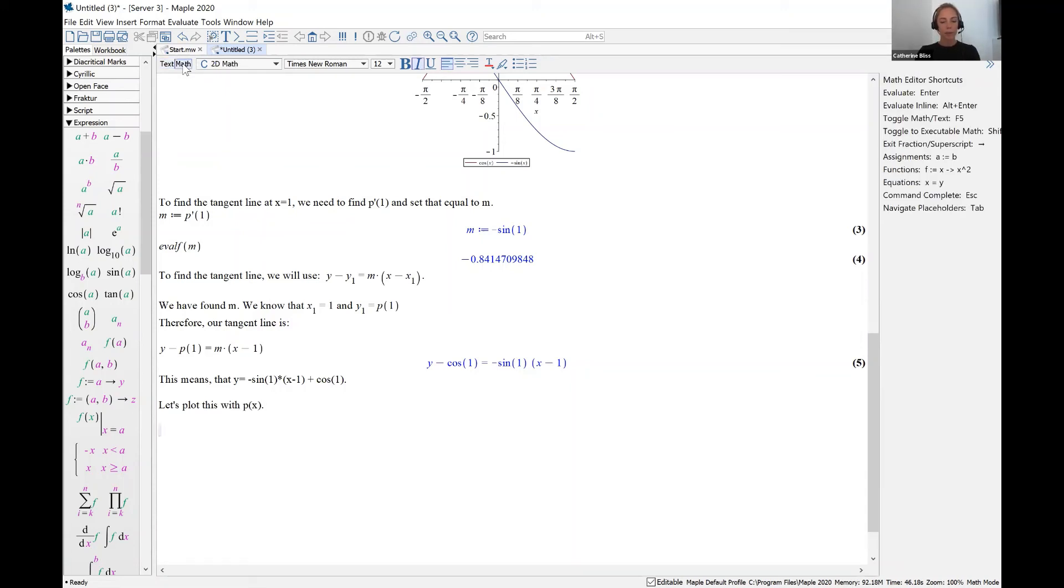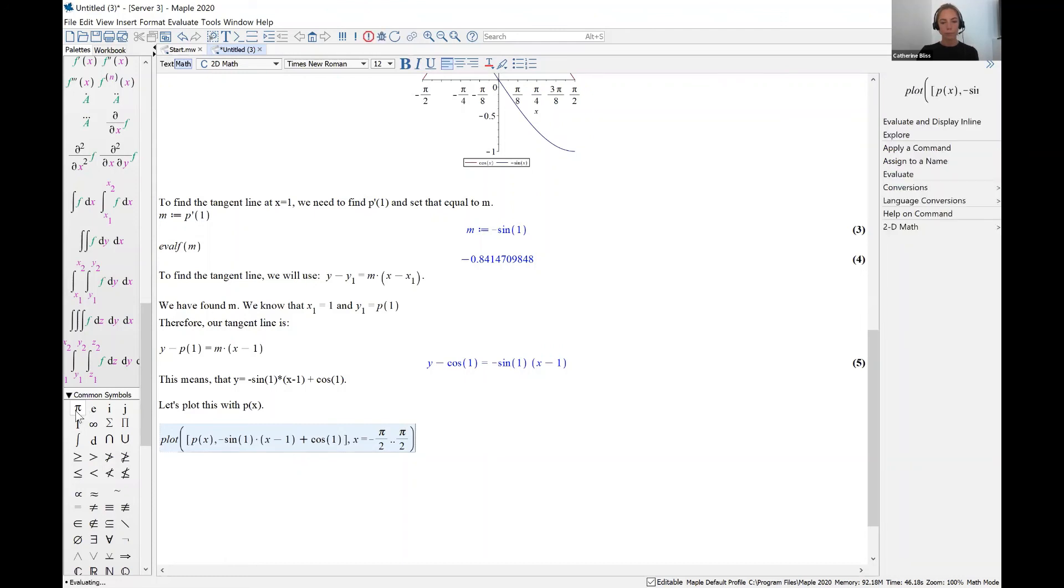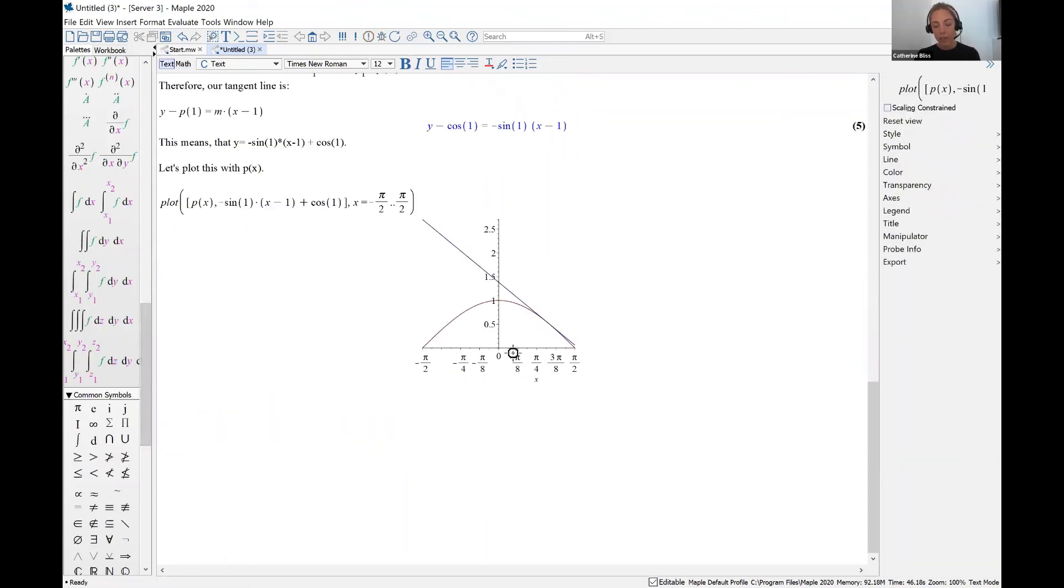I'm going to type plot parentheses square bracket, we want to plot the original function p of x along with our tangent line. Our tangent line is negative sine of x times x minus one plus cosine of one. Close square bracket. And x goes from negative pi over two up to pi over two. And that looks really good.